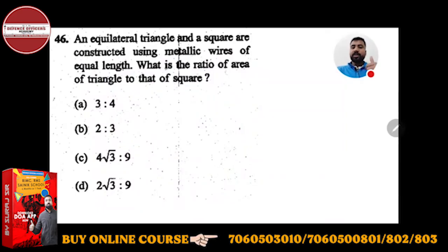This is the next question. An equilateral triangle and a square are constructed using metallic wires of equal length. What is the ratio of area of triangle to that of square? Options are given. So what is given to you: an equilateral triangle and a square which are constructed using metallic wire.